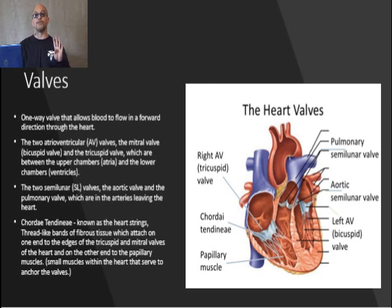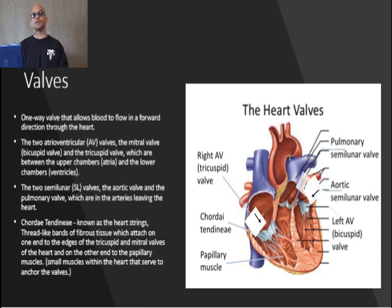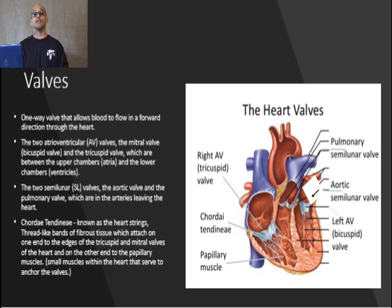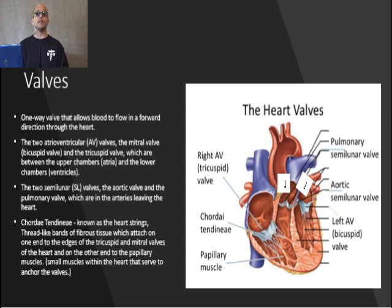There are four major valves in the heart: two atrioventricular valves and two semilunar valves. The valves are named for their shape and direction. The atrioventricular valves are called the tricuspid valve, meaning three flaps or cusps, and the bicuspid valve, meaning two flaps or cusps — also known as the mitral valve. The semilunar valves, both aortic and pulmonic, are named for their shape and where they direct the blood: aortic meaning to the aorta, and pulmonic meaning to the lungs.